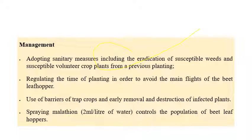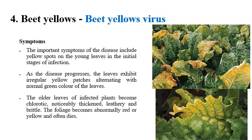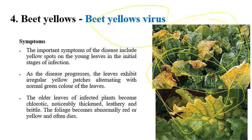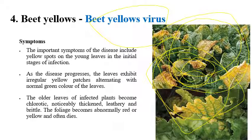The next disease is beet yellows, caused by beet yellows virus. The name itself indicates yellowing of leaves. Yellowing with alternate green and yellow patterns can be clearly seen. Puckering of leaves with slight shrinking of the midrib region can also be seen. In initial and end stages, these symptoms are clearly observable.